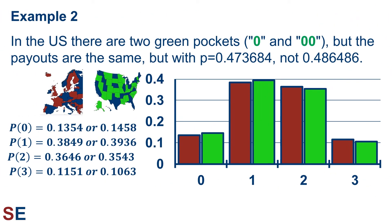An interesting aspect of roulette is that it is played differently in Europe and in the United States. In the United States, there are 2 green pockets — 0 and 00 — so there are 38 pockets total instead of 37. The payout being double is the same, but the probability of success is now 0.473684 instead of 0.486486. This creates a slightly different binomial probability distribution, and if you look carefully, the probabilities of winning are considerably less in the United States. This may be part of the reason why roulette is much more popular in Europe.